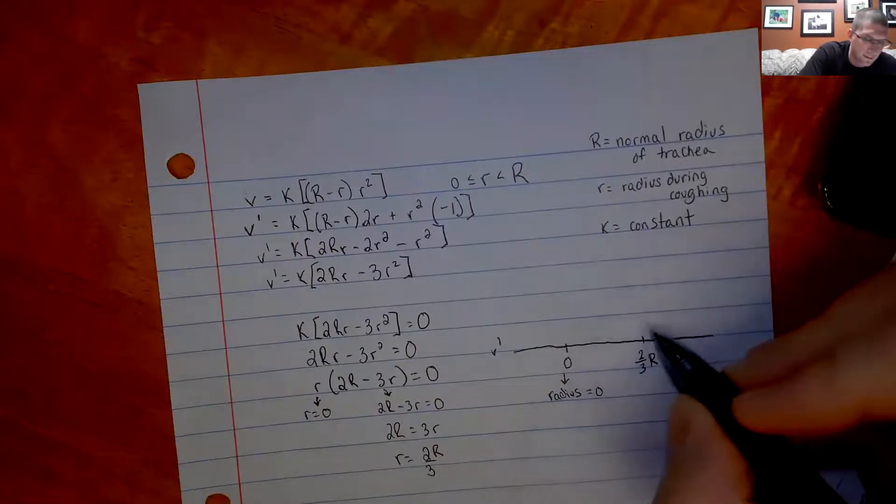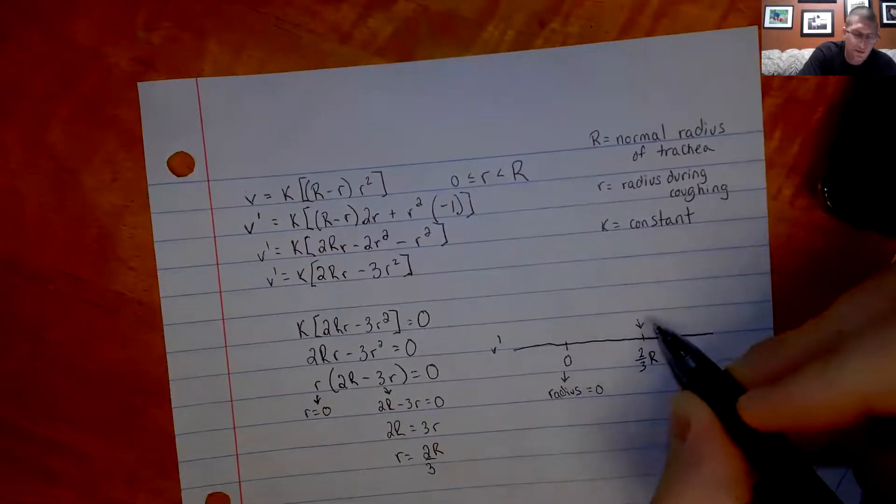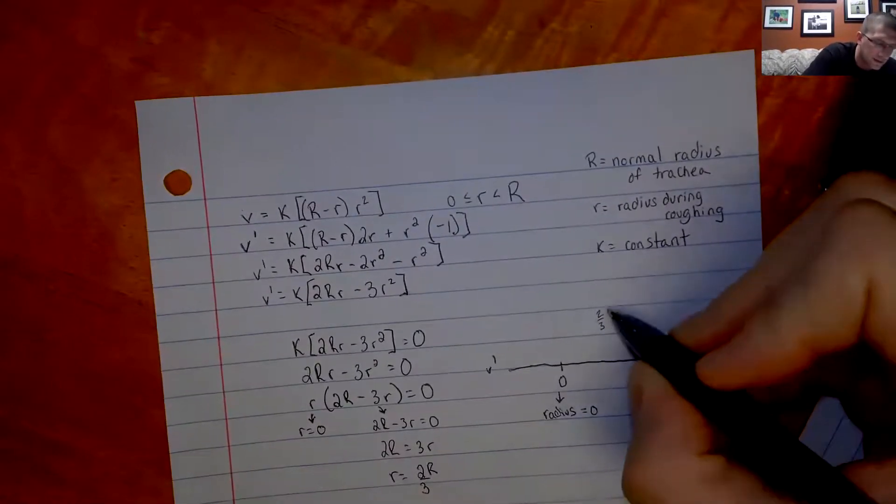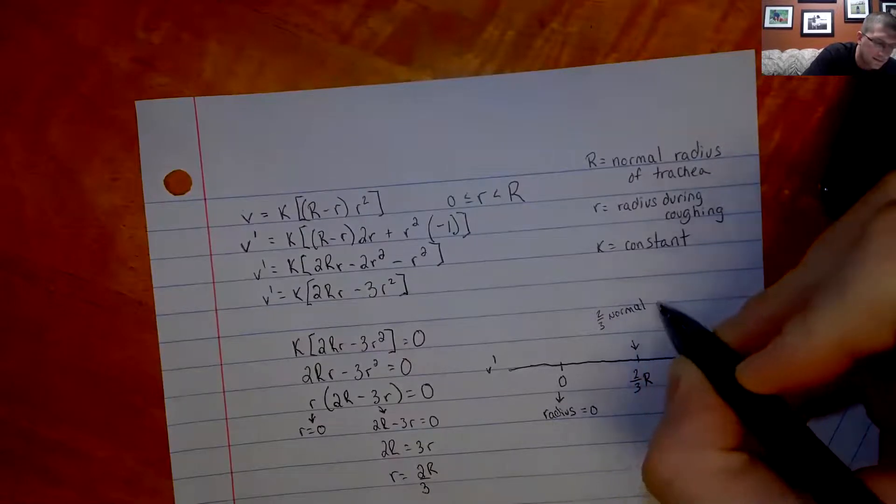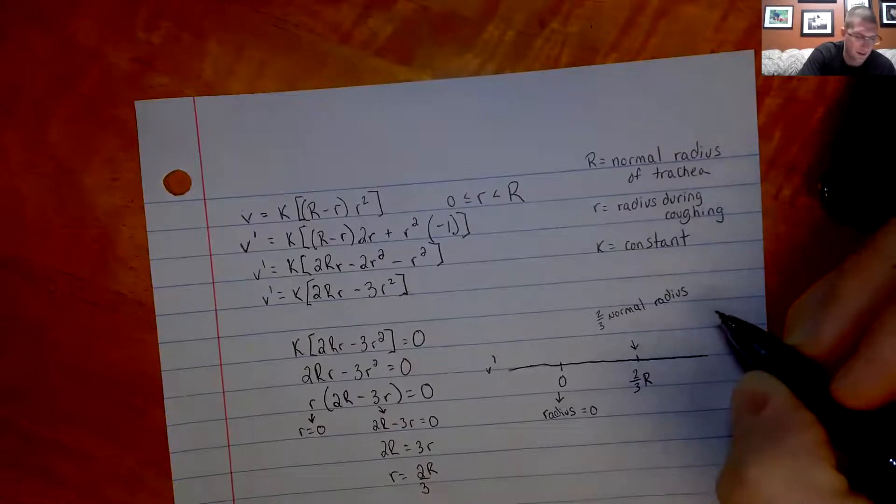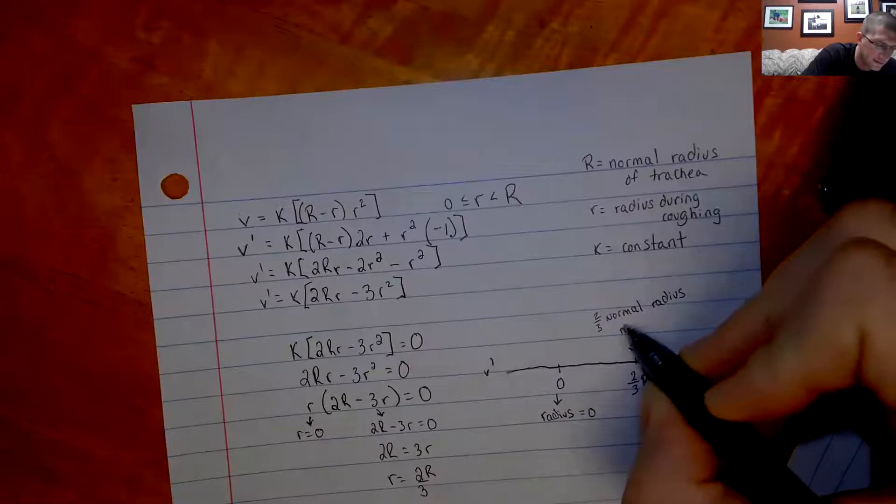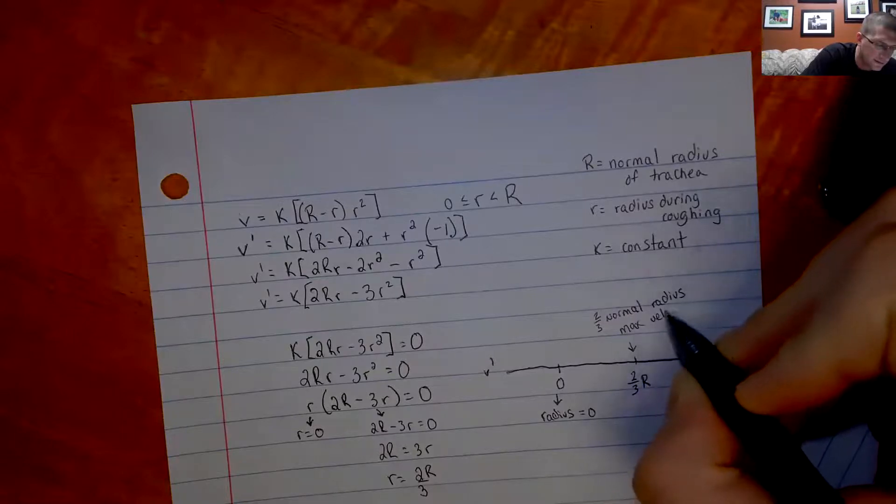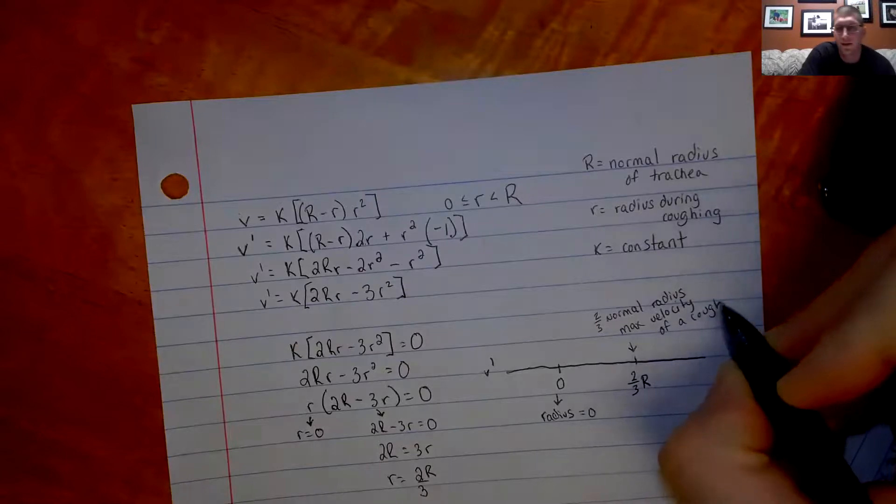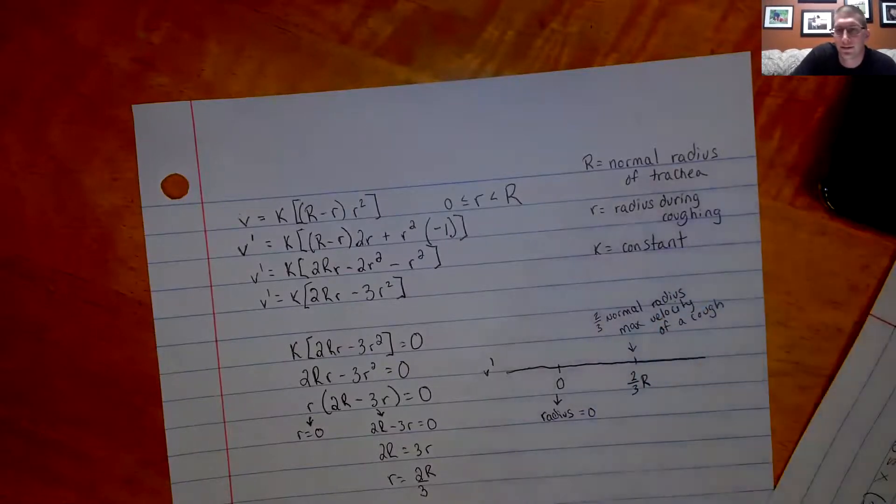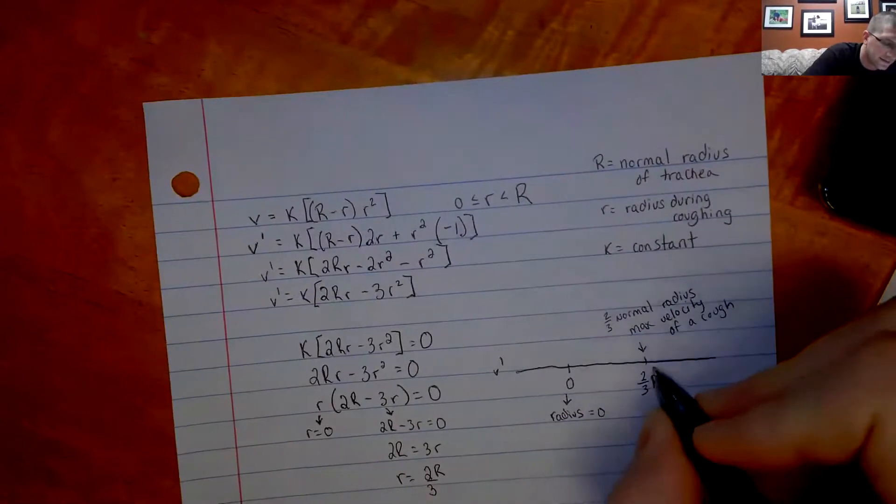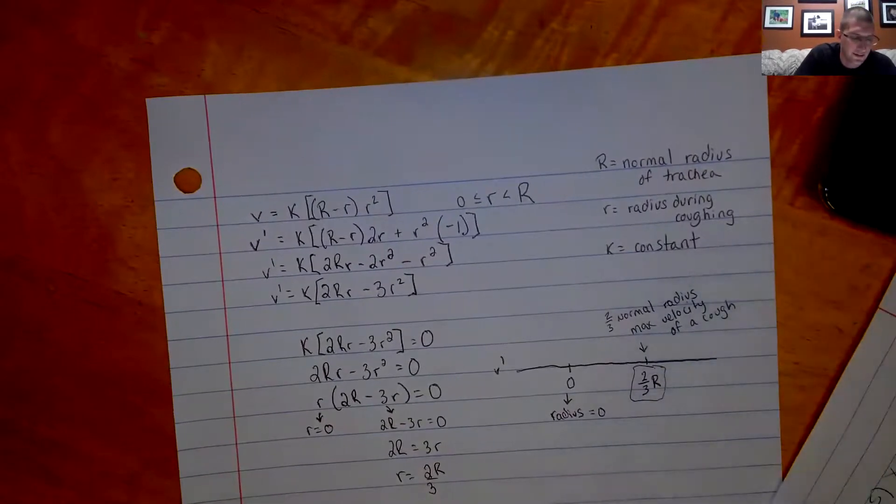If we think of this one, the radius is 2 thirds, so 2 thirds capital R, which is the normal radius of the trachea. And that would provide the max velocity of a cough. So this would be your max velocity of a cough. Your max velocity of a cough cannot be when your radius is 0. You have no airflow at a radius of 0. So I think with common sense, we can stop here and say that this is where our max velocity would occur.